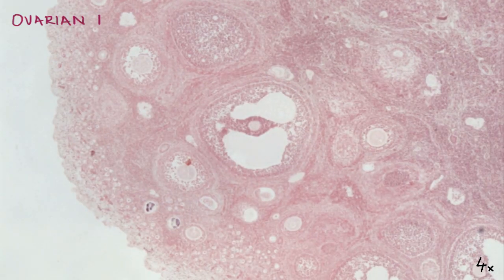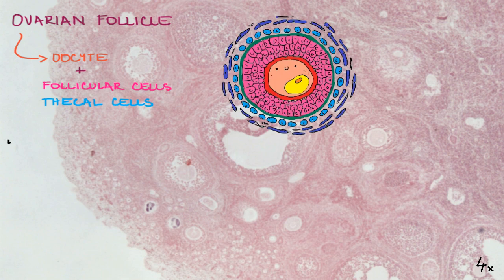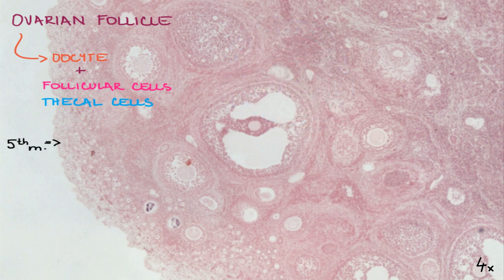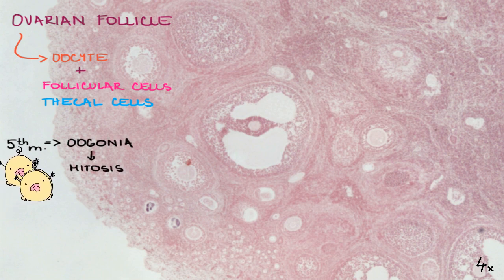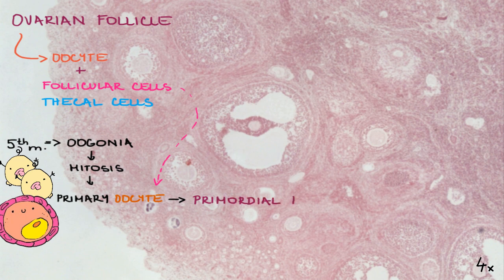An ovarian follicle is a structure made up of one oocyte surrounded by layers of follicular cells and thecal cells. By the end of the fifth month of fetal development, oogonia arrive at the cortex of the ovary. They undergo mitosis; some of them get bigger and become primary oocytes. Each oocyte then gets surrounded by flattened supportive cells called follicular cells, and the whole structure is called a primordial follicle.